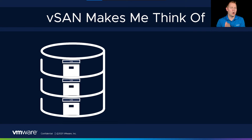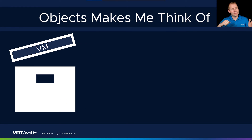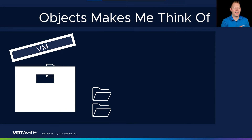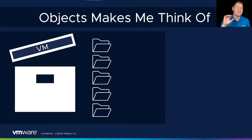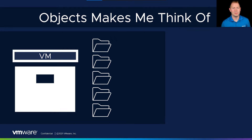Each VM has its own unique file cabinet. When we open up that file cabinet, we can have five different types of file folders. I use the word 'types' very specifically, because when we get to one of our objects, we'll talk about having multiple different types of that object.